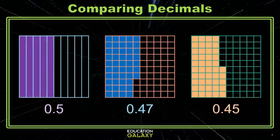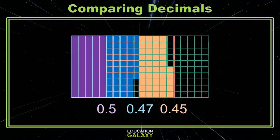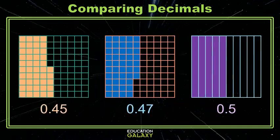If I want to order them greatest to least, there you have it. And if you want to order least to greatest, that 45 hundredths comes first, and that 5 tenths comes last.